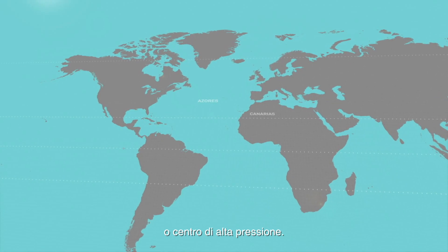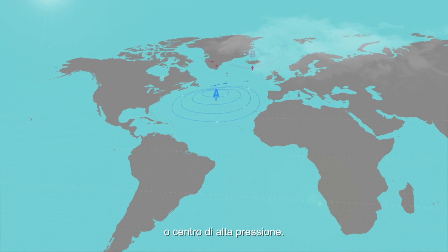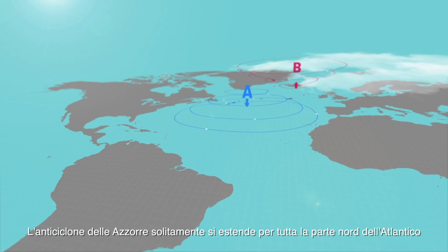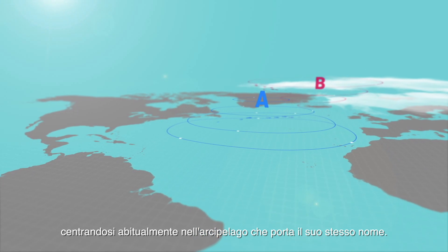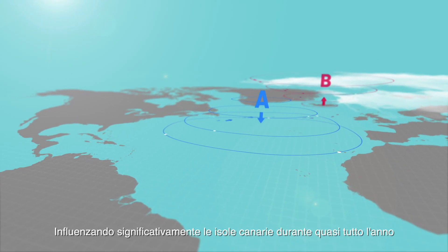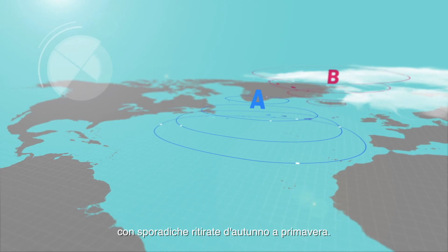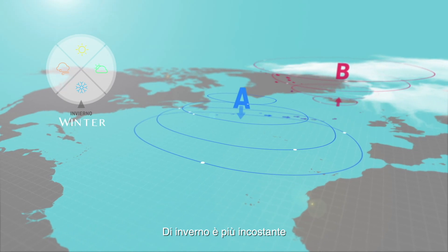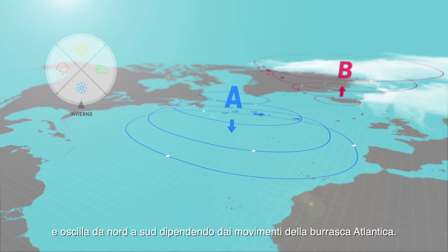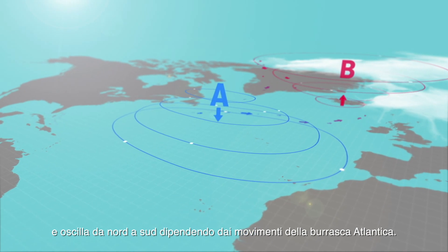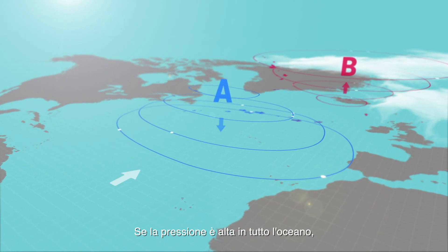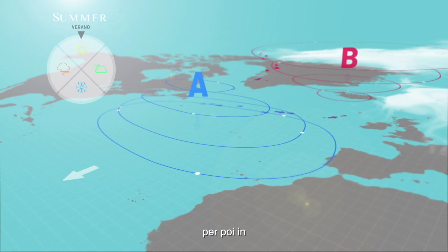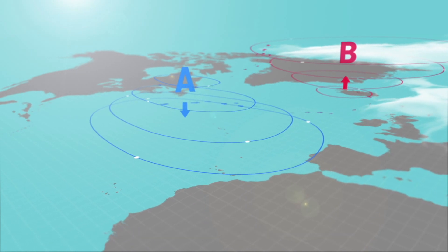Anticyclones, or high-pressure centers, are found between subtropical regions and the cooler areas of the planet. The Azores anticyclone usually spreads throughout the North Atlantic and focuses on the Canary Islands, affecting them for most of the year, though it withdraws occasionally between autumn and spring. In winter it is more inconsistent and moves from north to south depending on the position of the Atlantic depression. At times when there is high pressure all over the ocean, it usually moves to the north of the islands.